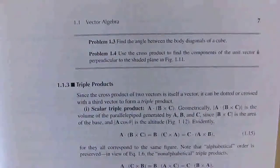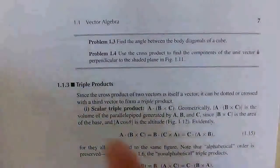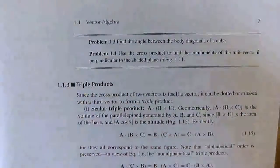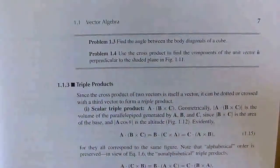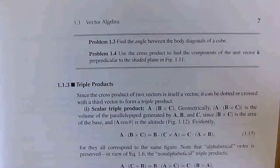Hello everyone, welcome back to the channel. Today we're going to be working through problem 1.4 from Griffith's Introduction to Electrodynamics. It says, use the cross product to find the components of the unit vector n-hat perpendicular to the shaded plane in figure 1.11.